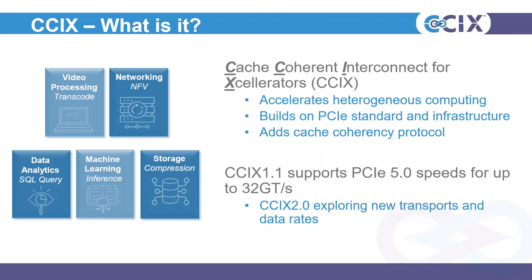This allowed us to get to market quickly and adopt something that's off the shelf and ready to go. The current specification is CXL 1.1, which supports up to 32 giga transfers based on PCIe Gen 5, building on top of that infrastructure. Out there on the market today you'll see quite a few CXL 1.1 and 1.0 devices implementing that standard. Today I'm going to be talking about CXL 2.0, which is going to be exploring new transports and data rates that can be enabled in the future.